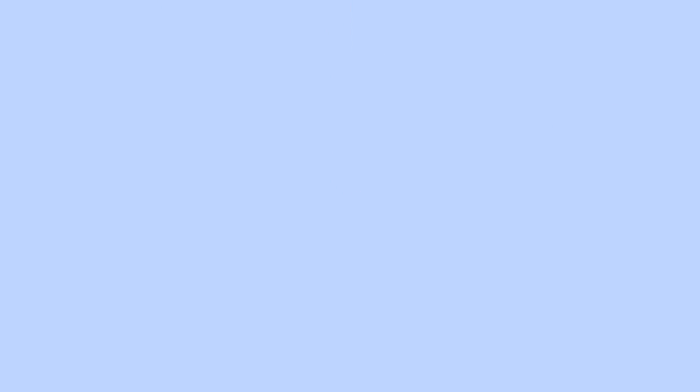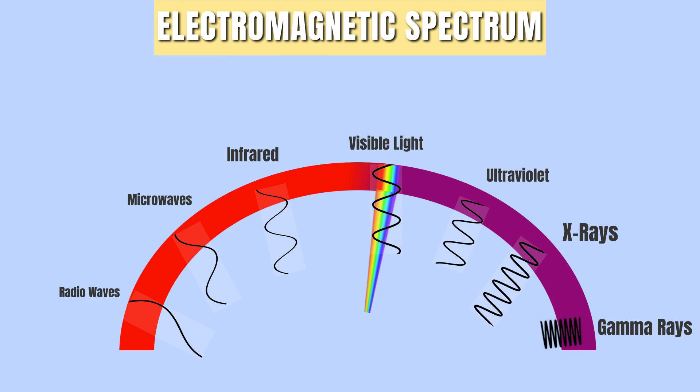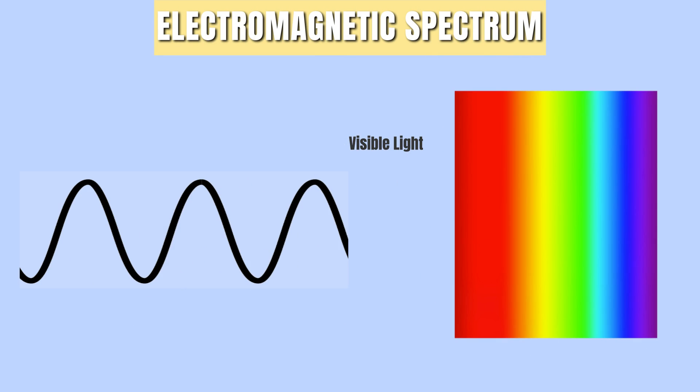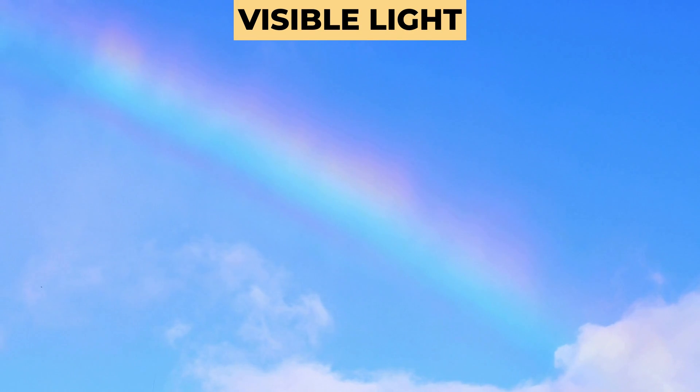For example, visible light is a part of the electromagnetic spectrum that we can see with our eyes. It has a relatively short wavelength. This allows us to see the colors of the rainbow, but visible light is just a small part of the electromagnetic spectrum.